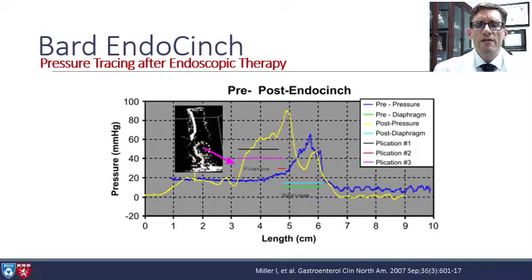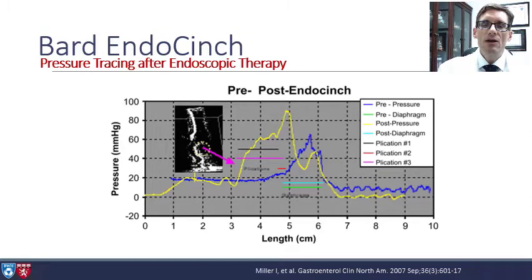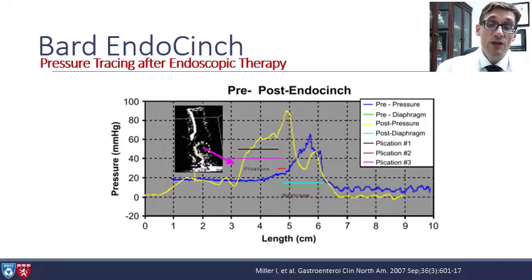There were some interesting physiologic studies published using this device. Ultrasound and manometric pressure tracings showed the pressure before the procedure in blue, and the post-procedure pressure in yellow was substantially higher. They were working in that intra-abdominal esophagus, and clearly even placing very superficial interrupted stitches with that old Bard device was able to change the pressure and characteristics of the lower esophageal sphincter.